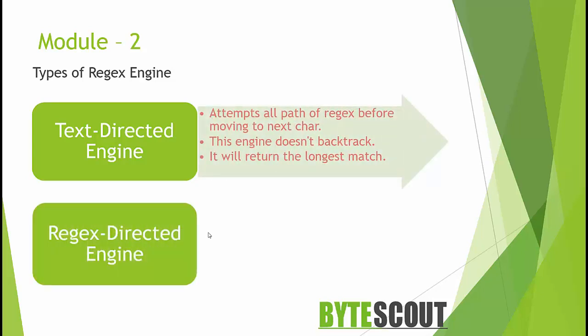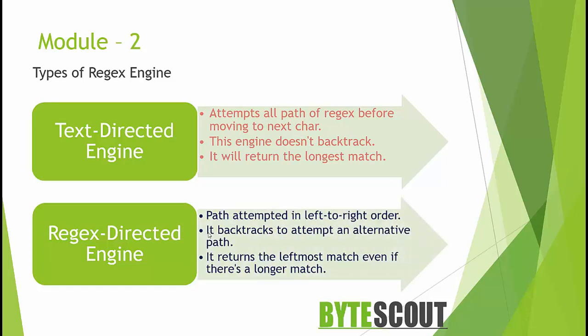A text-directed engine attempts all paths of the regex before moving to the next character of input, so this engine doesn't backtrack. In a regex-directed engine, paths are attempted in left-to-right order. If the engine fails to match, it backtracks to attempt an alternative path. Most modern engines like PCRE and egrep are regex-directed, as this is the only way to implement useful features like lazy quantifiers and atomic grouping.